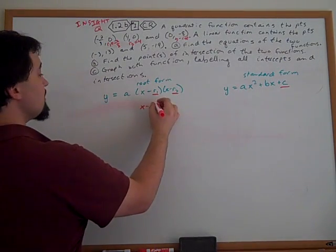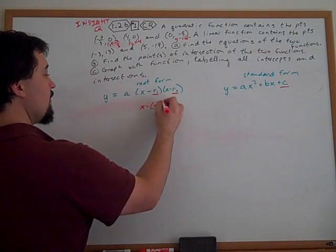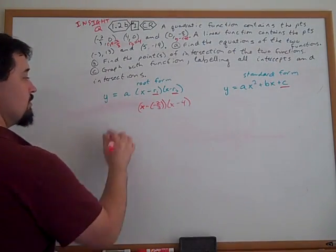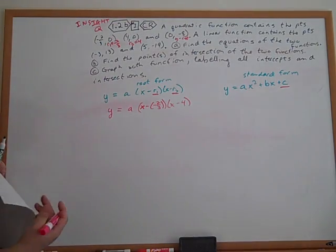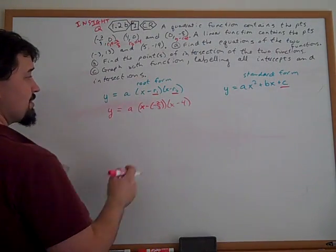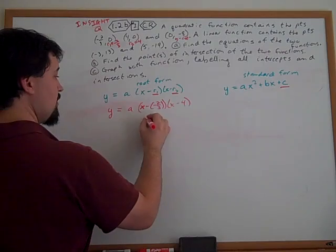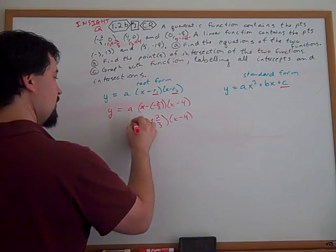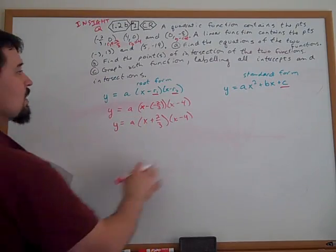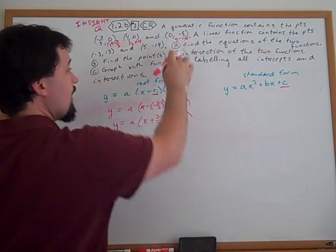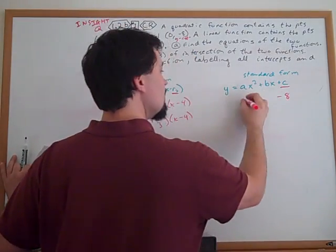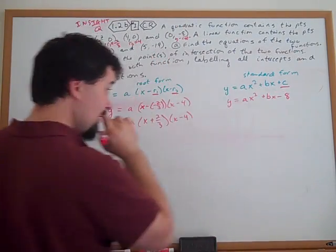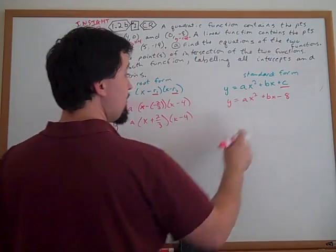x minus the two roots with a out front. Since it's a Constructor Response Question, I'm going to go ahead and show the extra step. Over here, we would automatically know the y-intercept is minus 8, so we would have ax squared plus bx minus 8. Notice that we still don't know what a and b are.